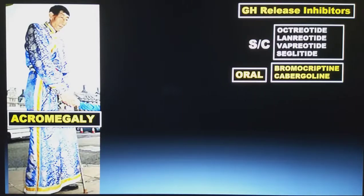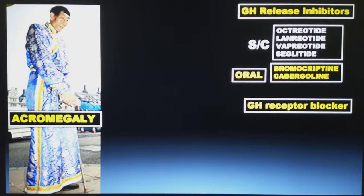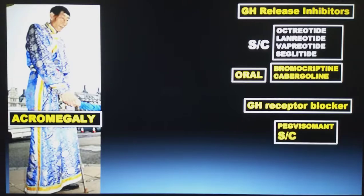There is another group of drugs useful for treatment of acromegaly called growth hormone receptor blockers. The example for growth hormone receptor blocker is pegvisomant, which is given by subcutaneous injection.